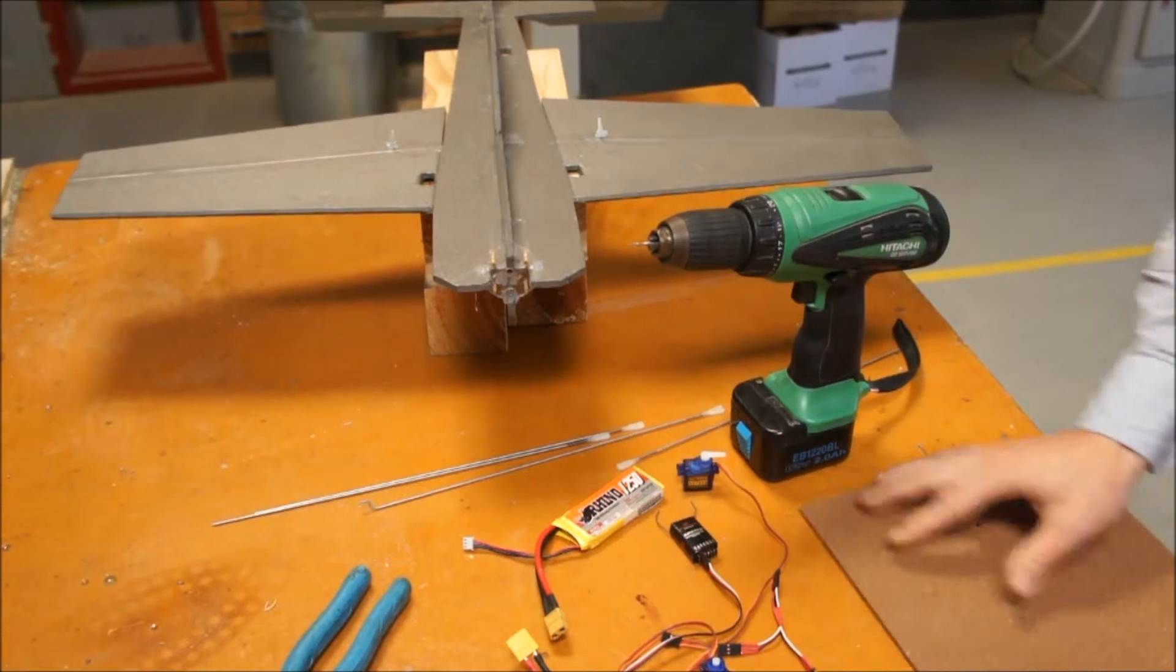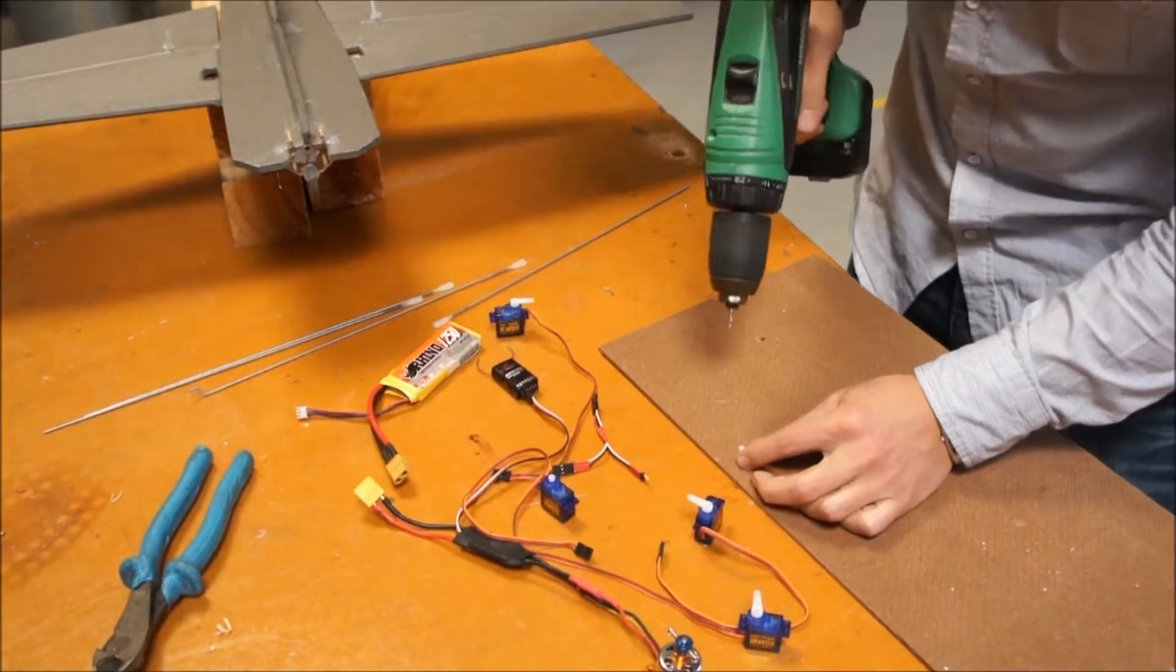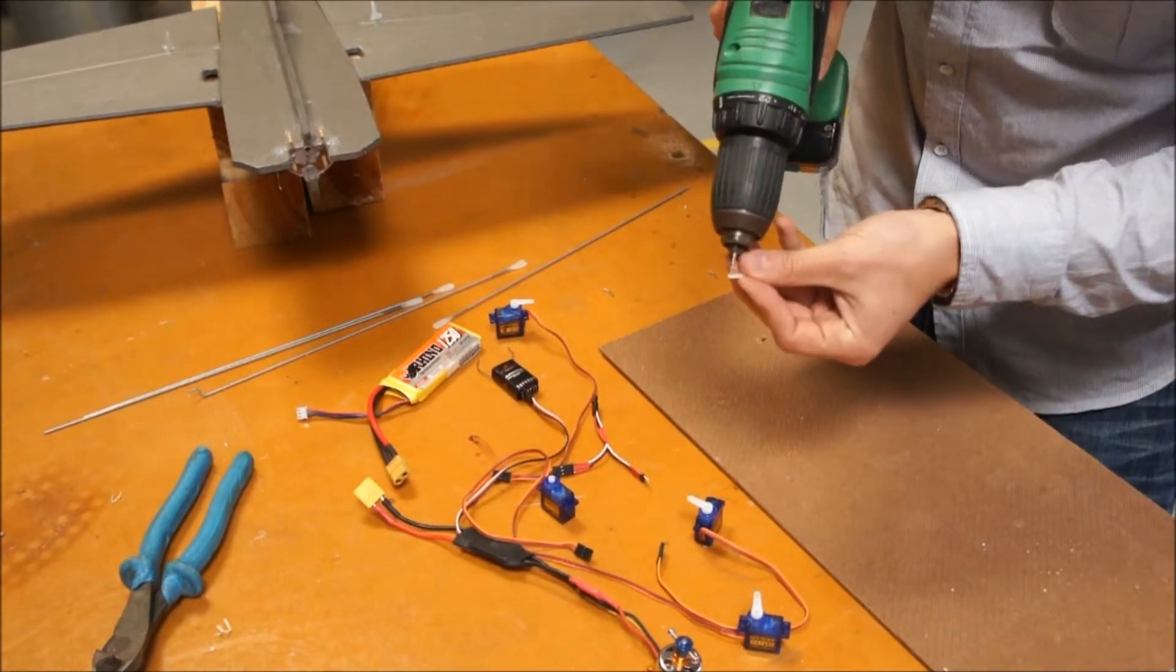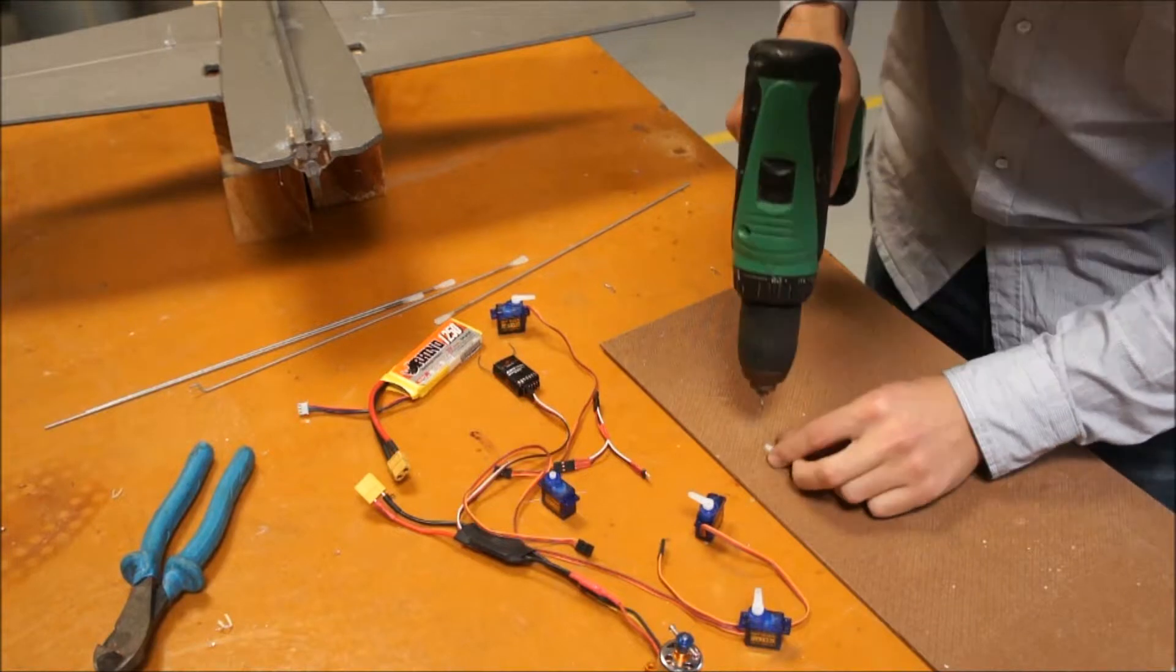Put a bit of board down so that I don't drill into the table and just holding it upside down. I'm going to go into the second hole back just because the diameter that I'm drilling out is going to get pretty weak if I go in the end hole. So the second hole back I'm going to go through.